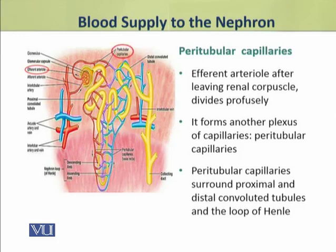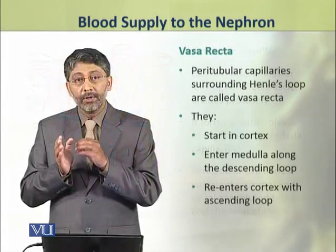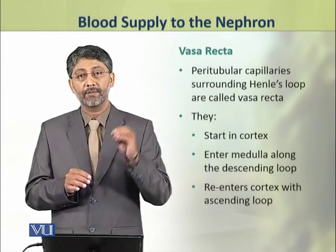The efferent arterioles, after leaving the renal corpuscle, divide profusely and form another plexus of capillaries called peritubular capillaries. The peritubular capillaries which surround the loop of Henle are termed as Vasa Recta.